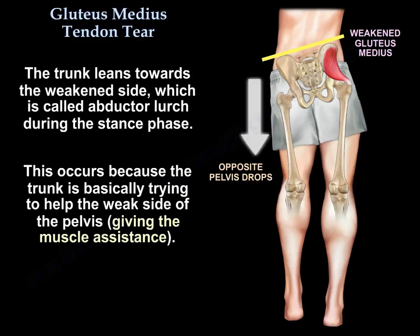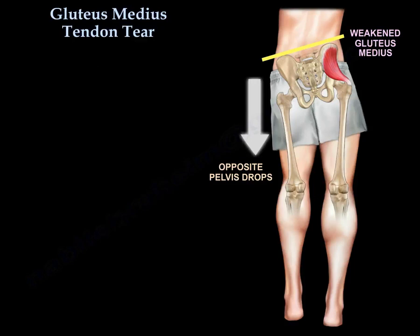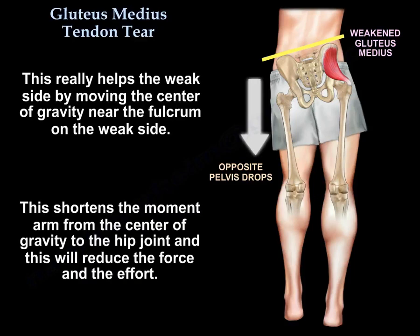The trunk leans towards the weak side because it is trying to help the weak side, giving the muscle assistance by leaning towards the muscle. This moves the center of gravity near the fulcrum on the weak side, shortening the moment arm from the center of gravity to the hip joint, which reduces the force and effort required.